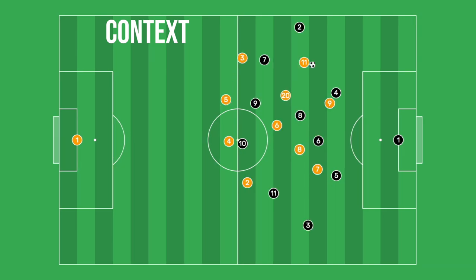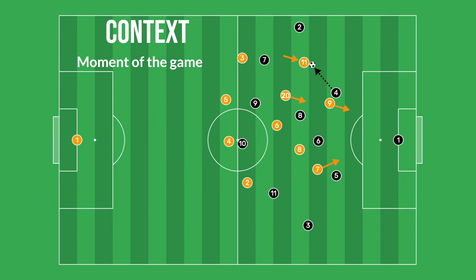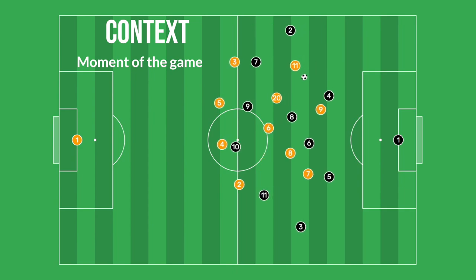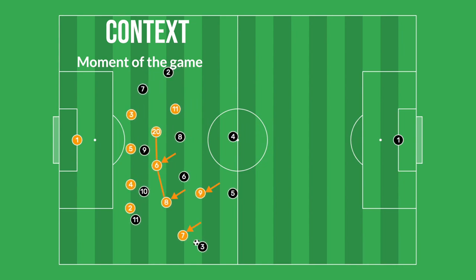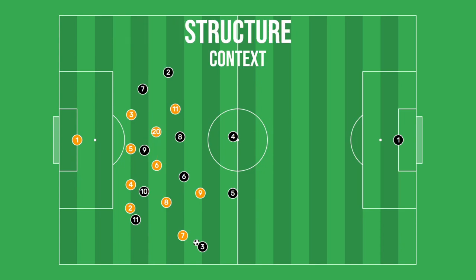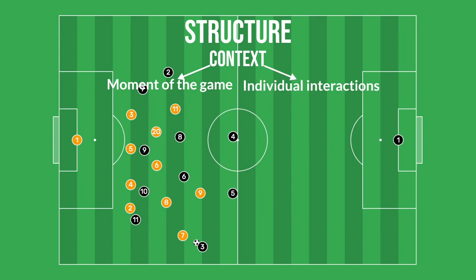Another important piece of context when discussing the structure of a team is the fact that structure changes depending on the moment of the game. When I say moment, I mean all of the different variables that affect the state of the game — like which team has the ball, what part of the field the ball is in, which phase of play the team is in, what the score is, how much time is left, and so on. All of those questions will have an effect on a team's structure. The structure of a team trying to counterattack while losing by a goal with two minutes left will look much different than the structure of that same team if they were defending while leading. So the two biggest variables to account for are the current state of the game and the interactions between individuals on the pitch.